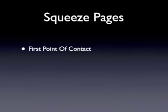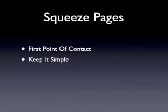Squeeze Pages is a very basic webpage that features your opt-in box and autoresponder code. This is where potential subscribers enter their name and email address to be added to your list. You want to focus on keeping your Squeeze Pages simple and avoid posting any external links or complicated navigation bars.